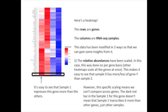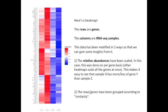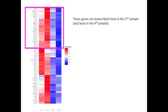However, this specific gene-by-gene scaling means that we can't compare across genes. The dark red bar in sample 1 for this gene doesn't mean that sample 1 transcribes it more than other genes, just other samples. The other modification that was done to this data is that the rows, that is to say the genes, have been grouped according to similarity.